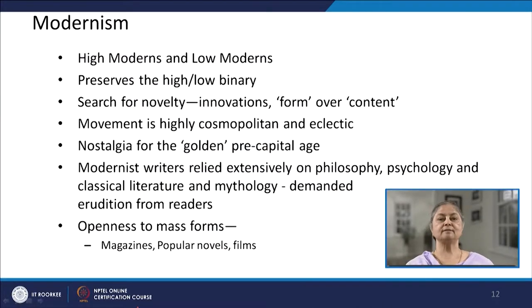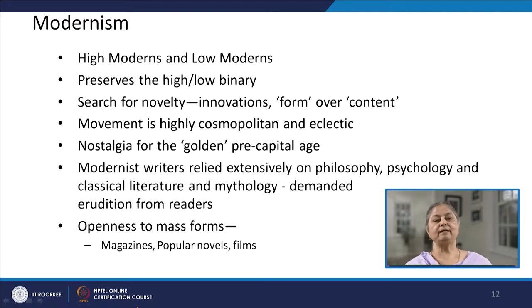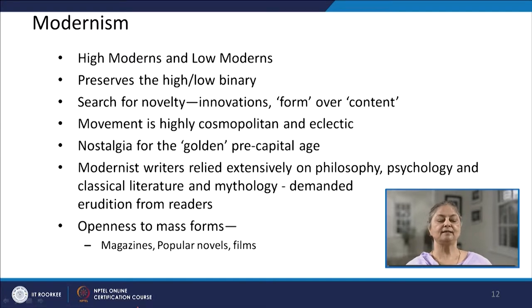The origins of these two distinctions can be found during the modernist era. It was during the early part of the 20th century that distinctions between high and low culture started to proliferate, later denied by postmodernist thought, but during modernism debates about high and low continued. In their search for innovation, modernist people also engaged in debates of form versus content, and this movement ultimately turned out to be highly cosmopolitan and aesthetic.